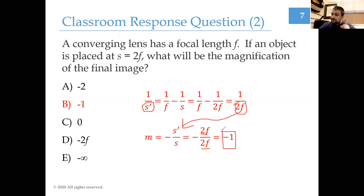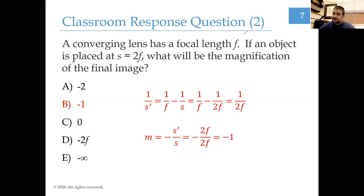A magnification of minus 1 means the image is exactly the same size as the object, but the minus sign means it is inverted rather than upright. Now let's prove this with the PhET simulation - let's see how these rays behave as I move the object around.